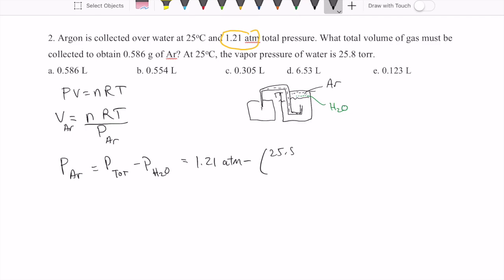The vapor pressure of water is given in torr, but we need to convert it to atmosphere to be able to cancel this out. So I'm going to use our conversion factor of 760 torr per atmosphere, and that should give us 1.176 atmosphere.